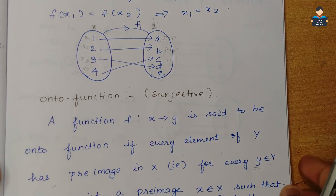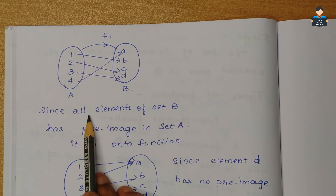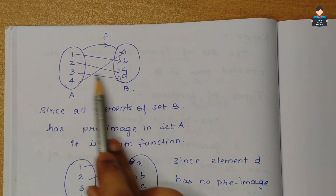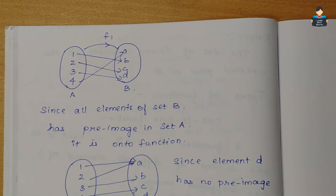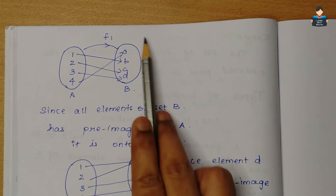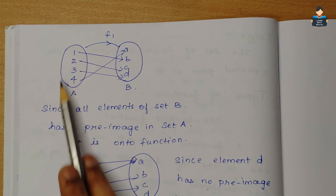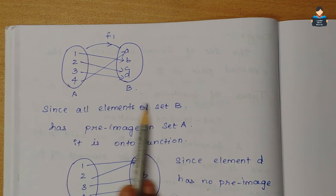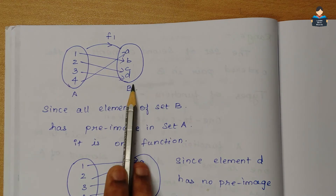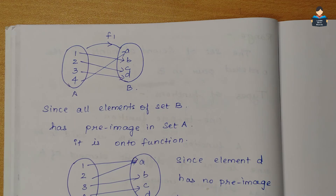Here is an example: b maps to 2, c maps to 3, d maps to 4, a is mapped. In set B, all elements have a pre-image in set A. Since nothing is left over, this is an onto function. If an element is left over and has no pre-image, it is not onto.